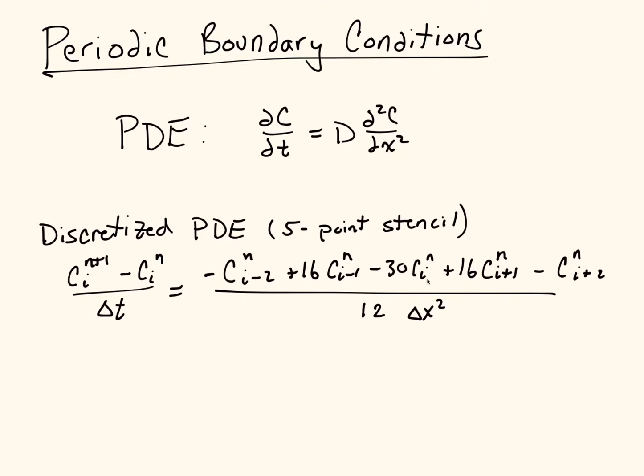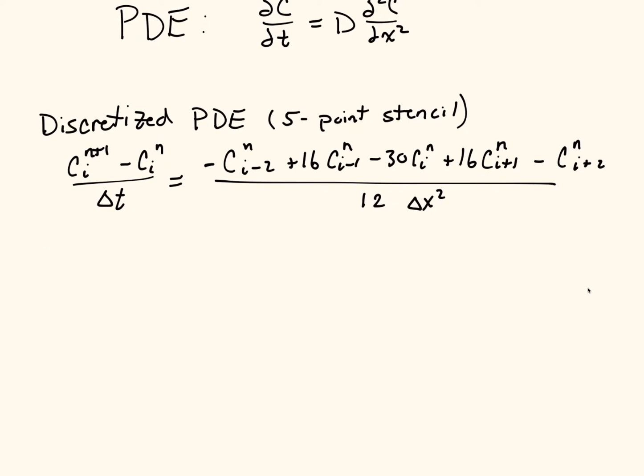So we have our ci point, ci minus 1, ci minus 2 to the left, ci plus 1, and ci plus 2 to the right. That's what we want to discretize using our periodic boundary conditions.